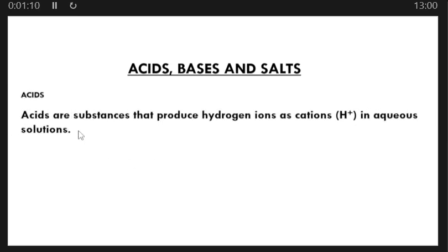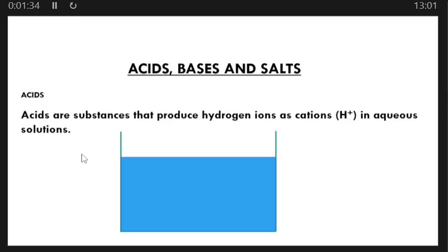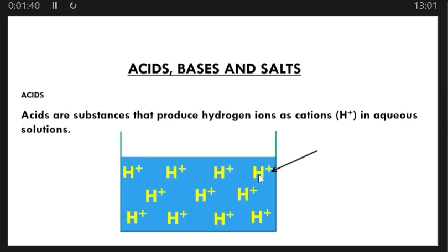By definition, acids are substances that produce hydrogen ions as cations in aqueous solution. So when you have a substance put in aqueous solution and it produces hydrogen ions as the only positively charged ions, then that substance is considered to be an acid. If we have a container of water and we add a substance that produces positively charged hydrogen ions, then that solution formed is an acid, and the substance added is said to be acidic.